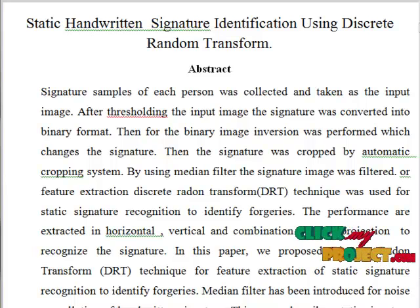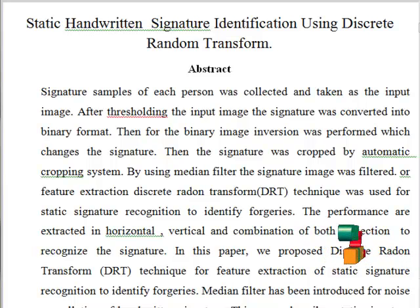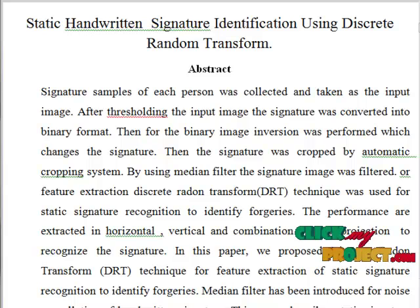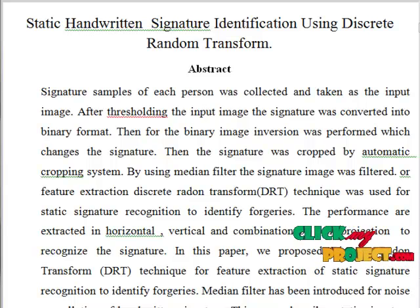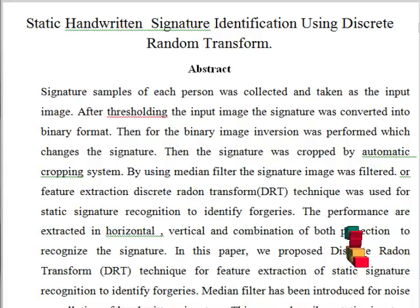For feature extraction, discrete radon transform technique was used for static signature recognition to identify forgeries. The performance features are extracted in horizontal, vertical, and combination of both projections to recognize the signature. Median filter is used for filtering because it is used for smoothing and removal of noise.